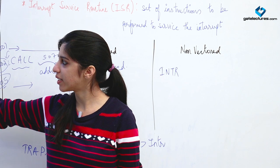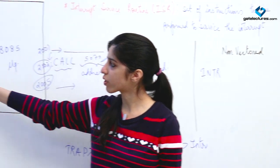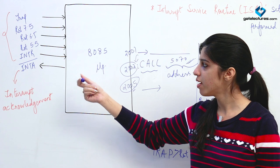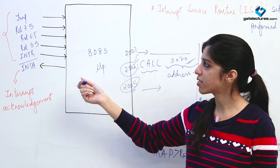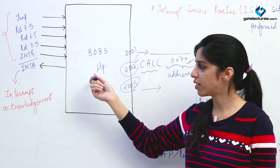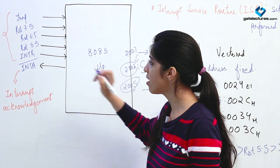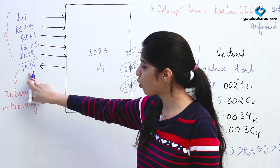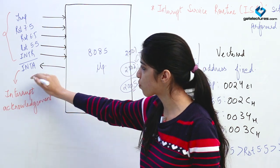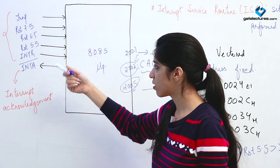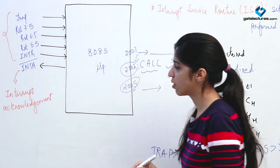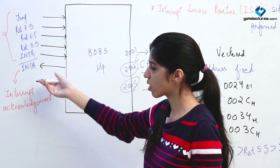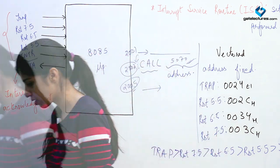There is one more pin, INTA bar, which is to acknowledge the interrupt. Whenever you give an interrupt to the 8085, just to acknowledge that it has received the interrupt, it is going to give this INTA bar signal. This is an active low pin — if this pin becomes 0, that means the interrupt is acknowledged. You can connect an LED or something here so that you know the interrupt is being acknowledged.